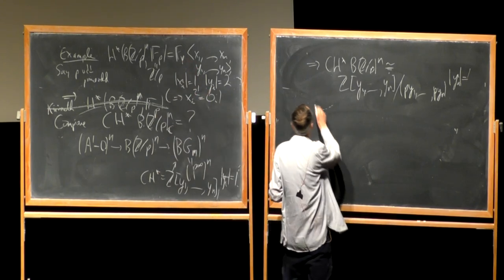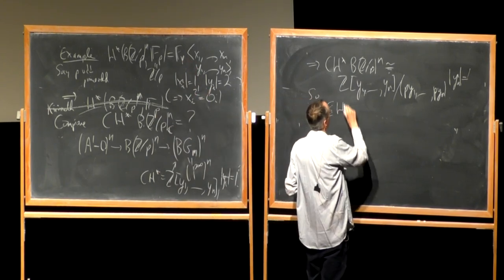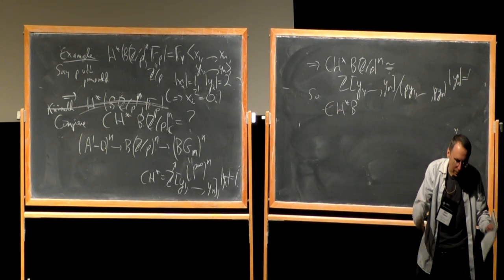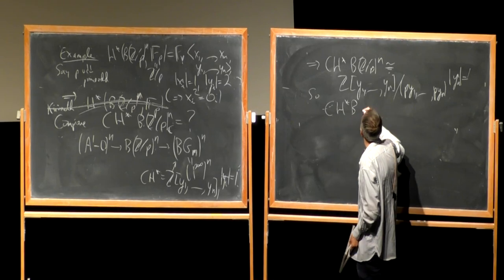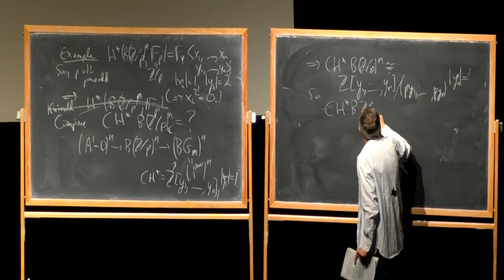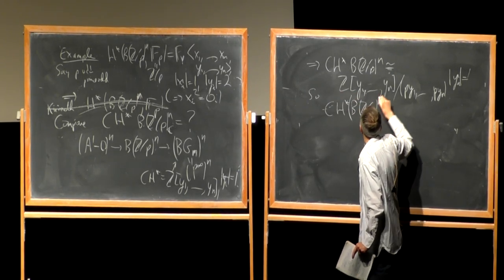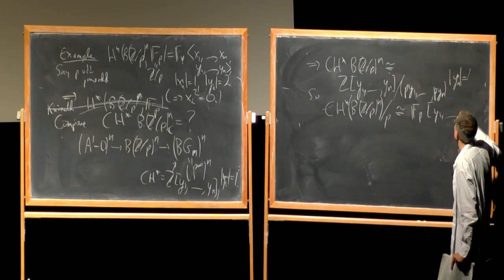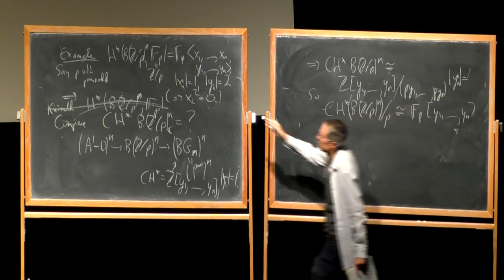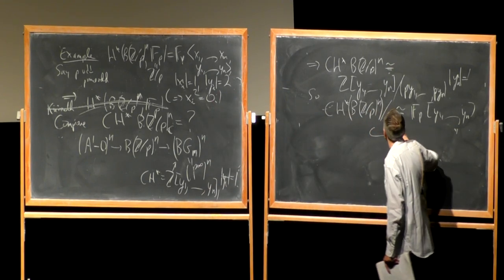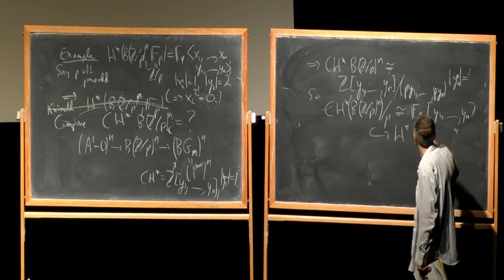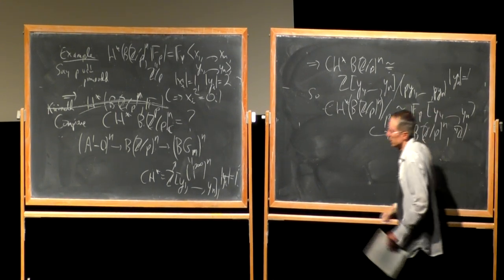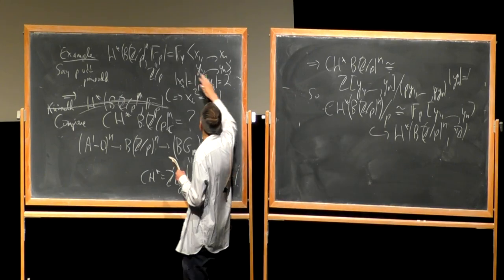The point is that F_p[y_1, ..., y_n] is quite different from the full cohomology ring. The Chow ring modulo p injects into the cohomology ring, but it's not the same thing. The Chow ring only maps to the even-degree generators; it misses the odd-degree generators x_i. Even more: x_1·x_2 is an element in cohomology that does not come from the Chow ring.